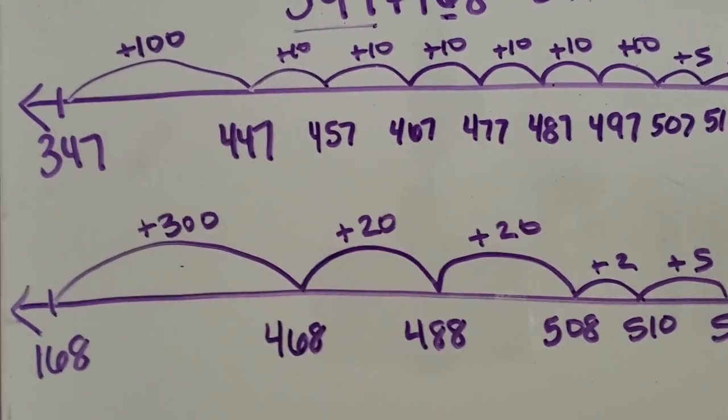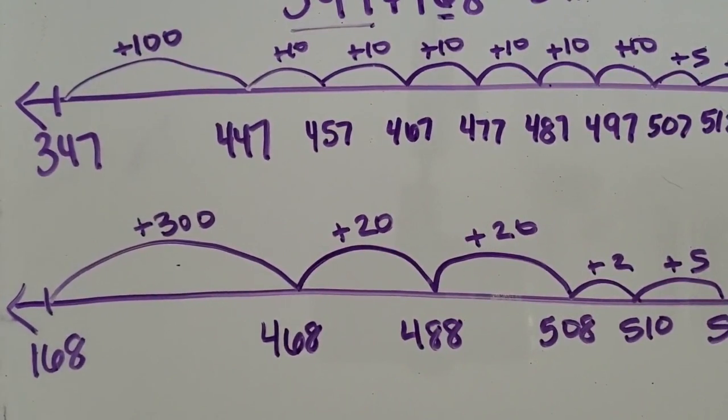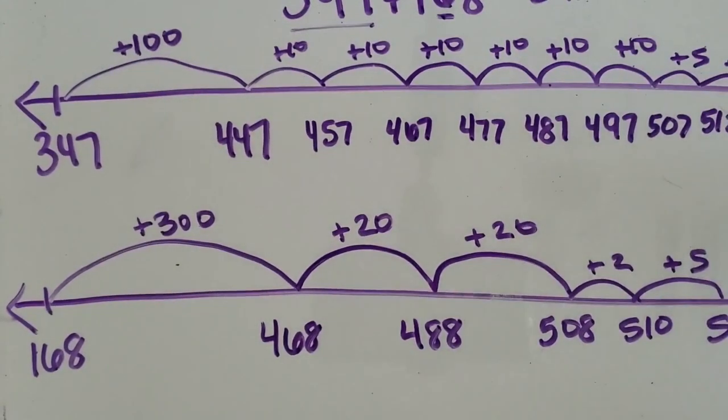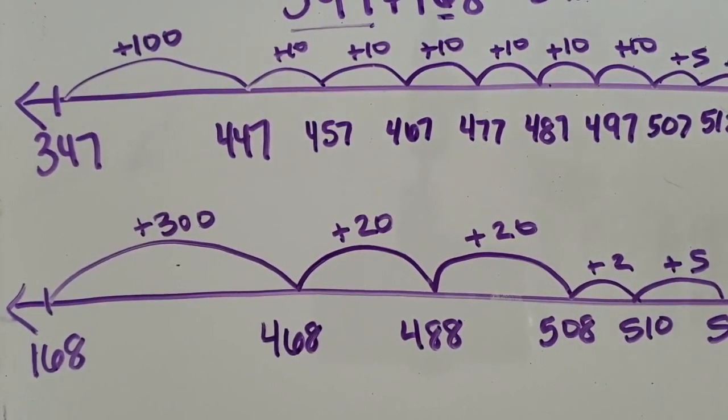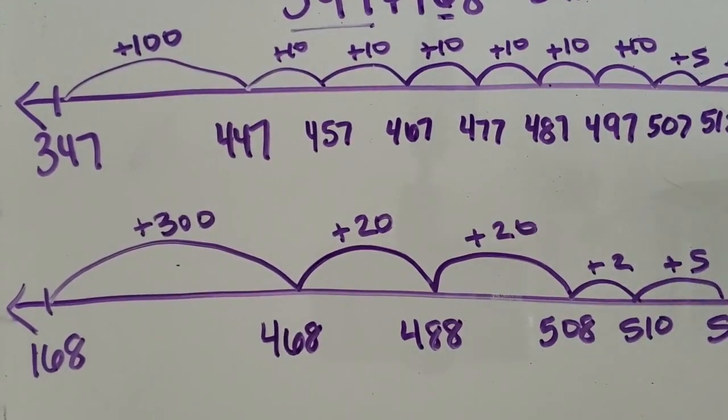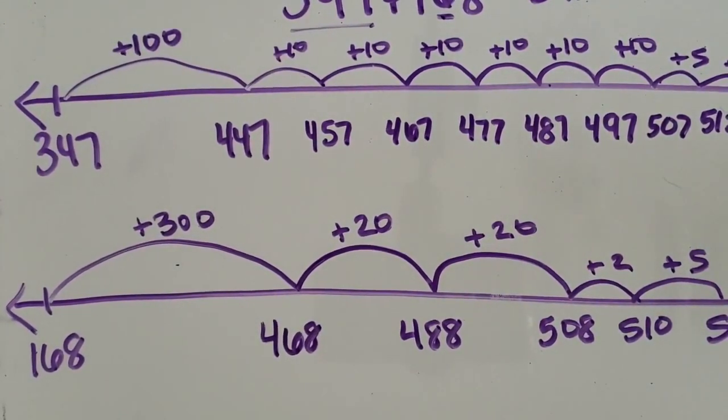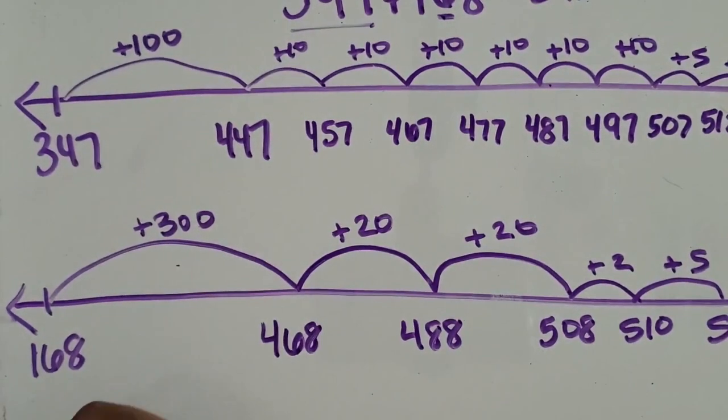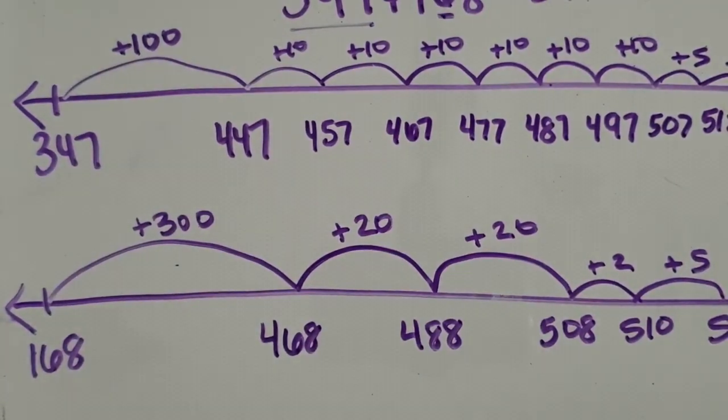So it all depends on how the child is flexible with their numbers and their thinking. There's so many different options with the open number line. It can seem confusing in the beginning, but once you understand how you get to choose what numbers work for you, it makes so much sense. And there's so many different ways to solve your problem. So we added two three-digit numbers using the open number line.